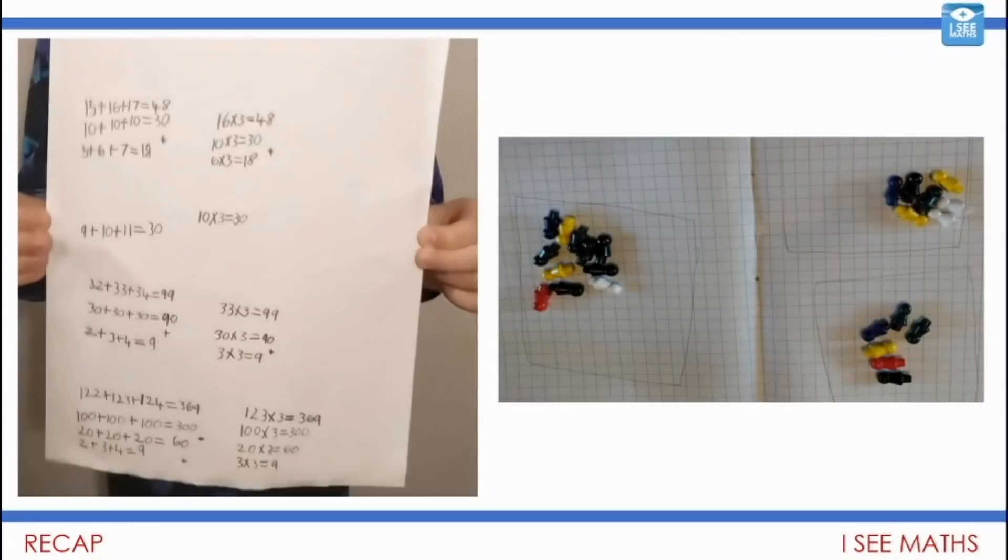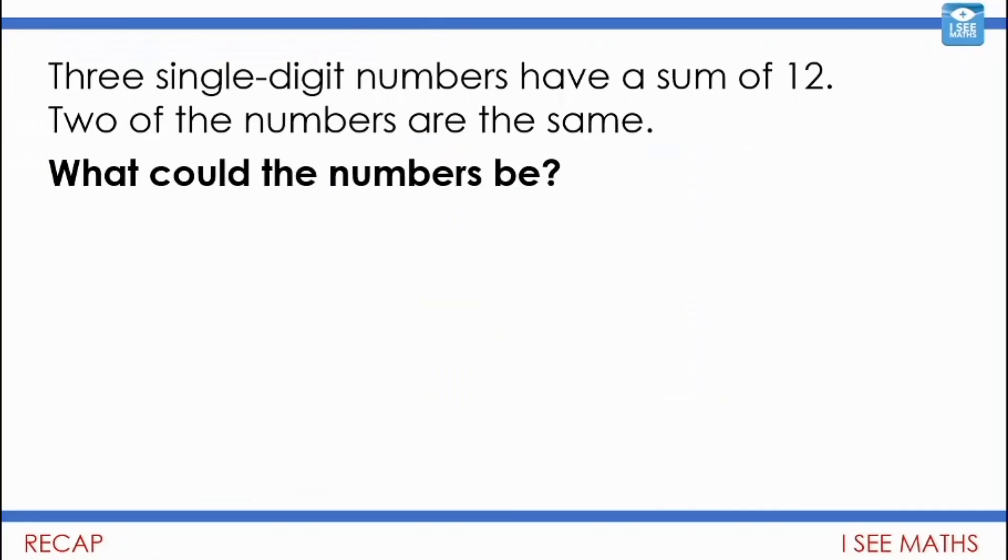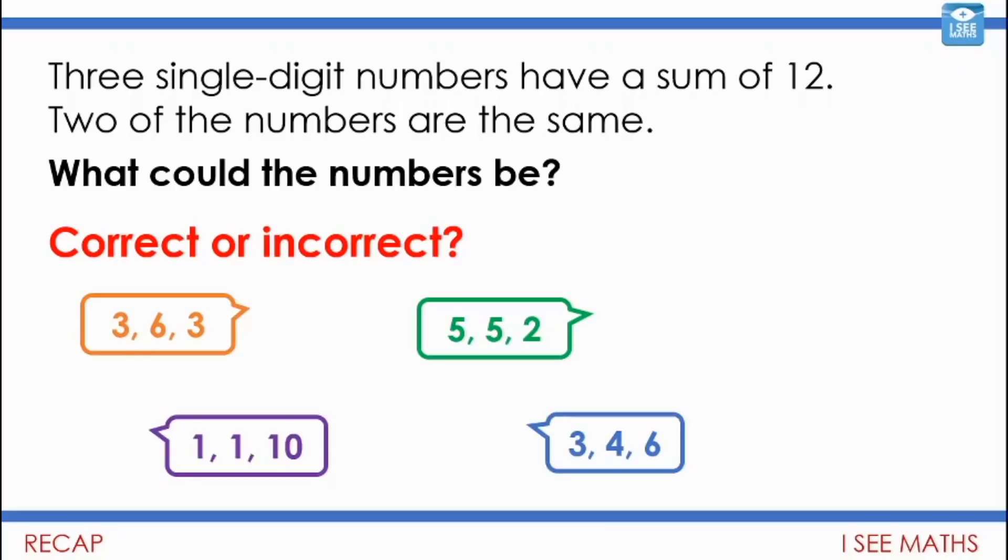So one of the skills we've been working on has been adding three different numbers. We did it in the very first video, the consecutive numbers challenge, and we actually did it in the next task, the three numbers challenge. Now that's a skill you're going to need for today's task, so we're going to have a bit of a practice before we get into the main task. Let's have a look at this question. Three single-digit numbers have a sum of 12. Two of the numbers are the same. What could the numbers be? Have a look at these responses. Are they correct or are they incorrect? Pause the video and see if you can explain why.